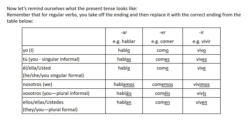Same thing for vosotros. You've got habláis with an A for your AR verb, coméis with an I for your ER verb, and bebéis with an I for your IR verb. And then for ellos, ellas and ustedes: hablan, comen, beben. So the AR verb ends in AN and the ER and IR verbs end in EN.